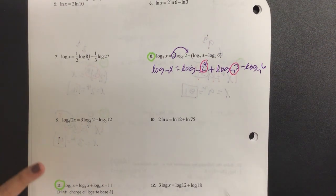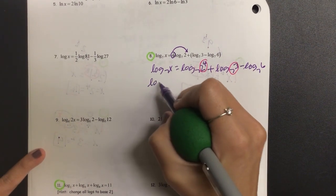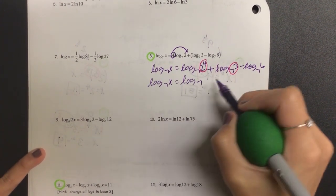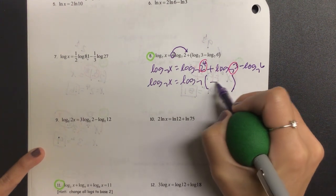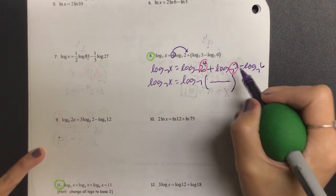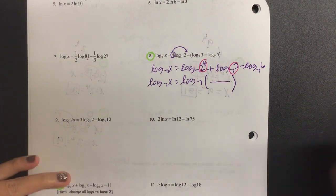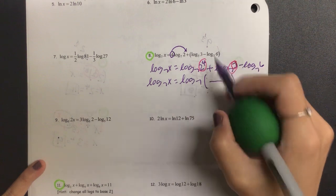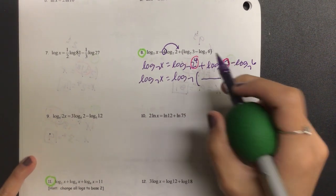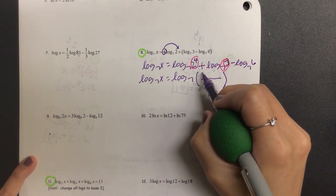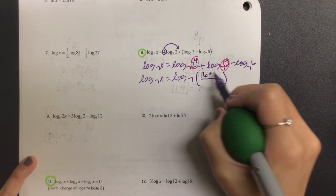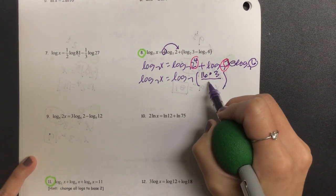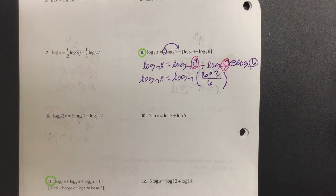We have log base 7 of x is equal to log base 7. Give me a big fraction. So 2 to the power 4 is going to multiply, and I start with the 7, 3 is going to multiply. The common base will stay the same. Could we actually compute 2 to the power 4? What is it? 16, and then times 3. The 6 has a minus sign that's going to go on the bottom.